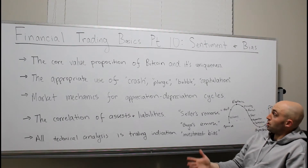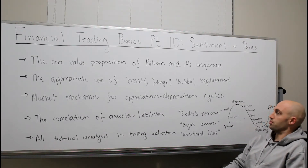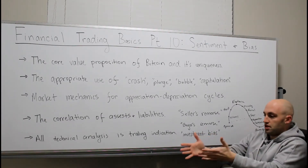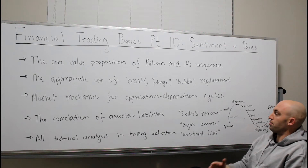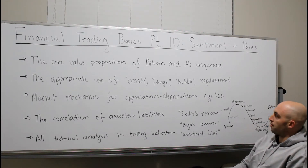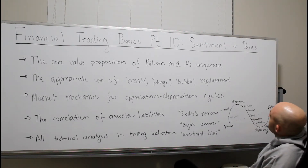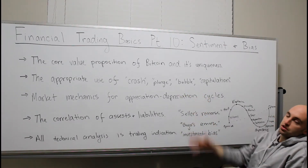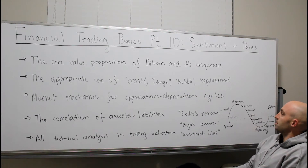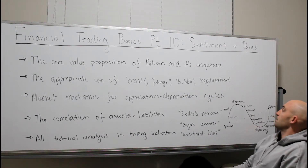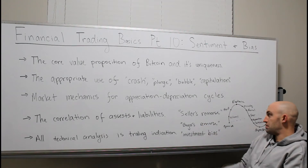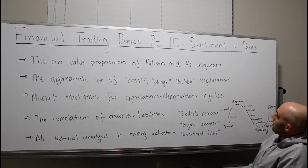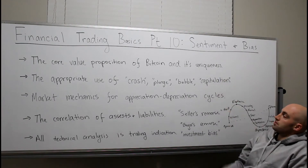I don't think defining a correction as a 10% pullback is a definition of a crash. I don't think either really matters. Bubble and capitulation — same thing. My point is people use these terms very sloppily, very messily, and it's just a result of sentiment and bias.